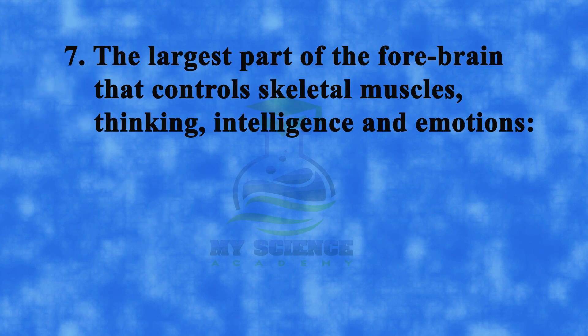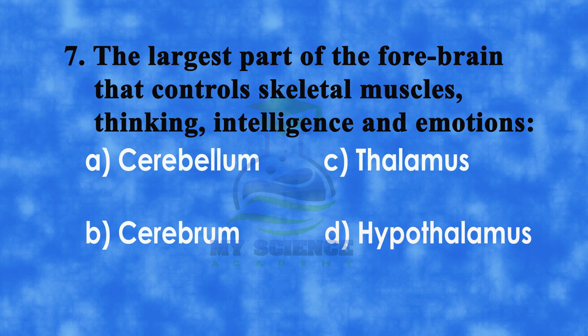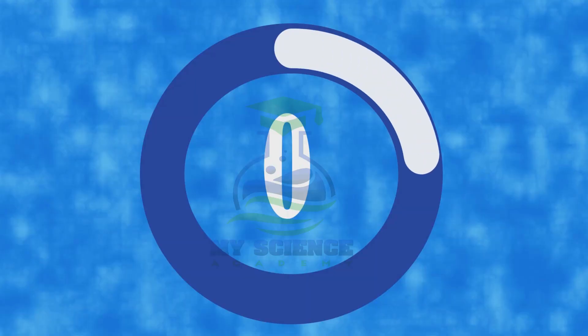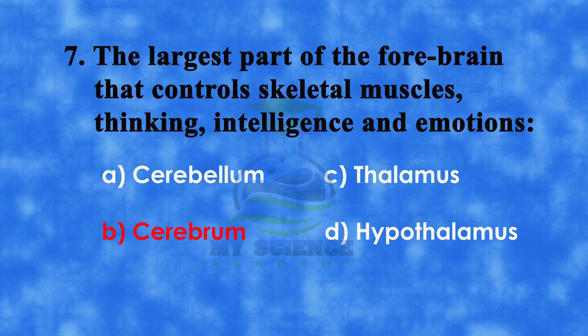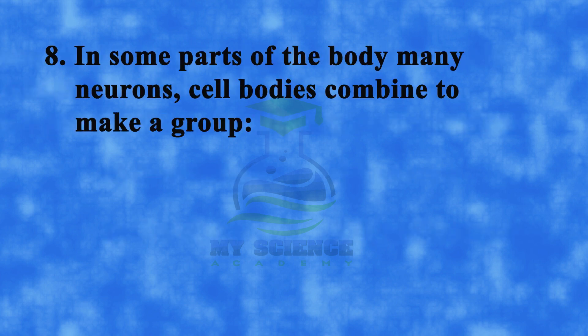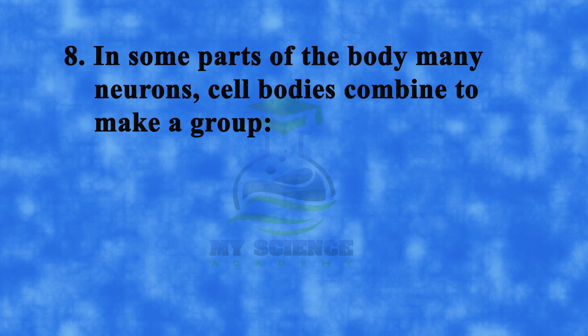Number 7: The largest part of forebrain that controls skeletal muscles, thinking, intelligence and emotions. A: cerebellum, B: cerebrum, C: thalamus, or D: hypothalamus. And correct answer is B: cerebrum.